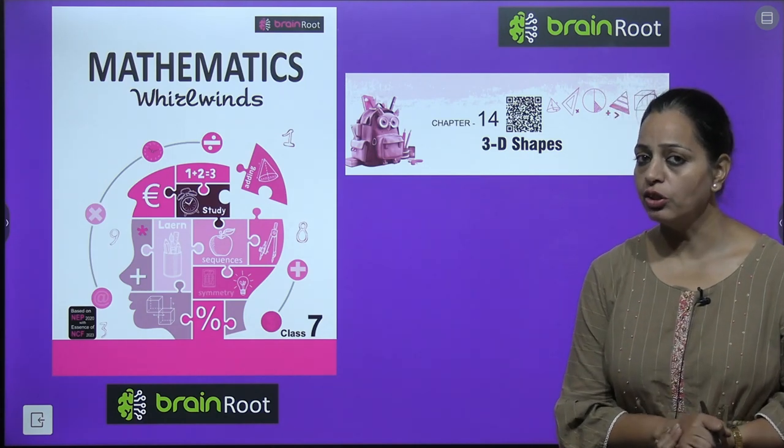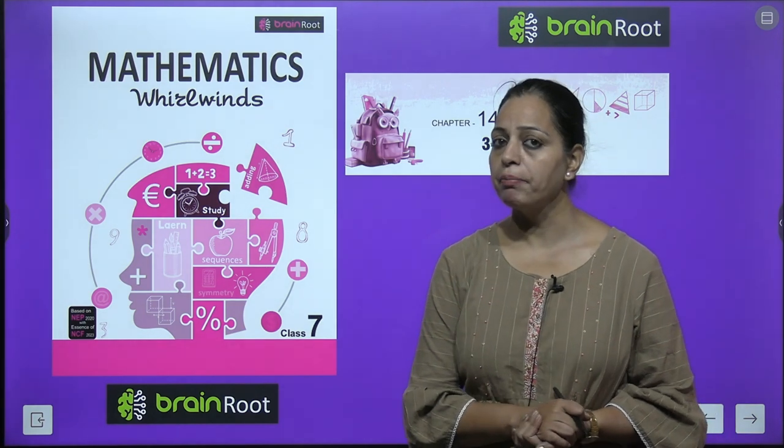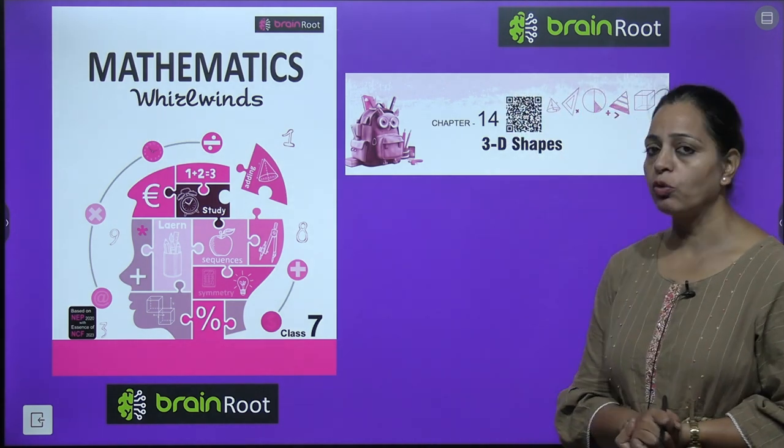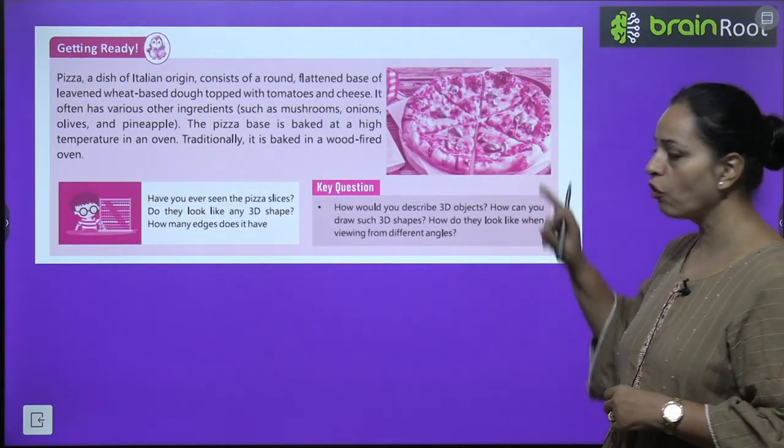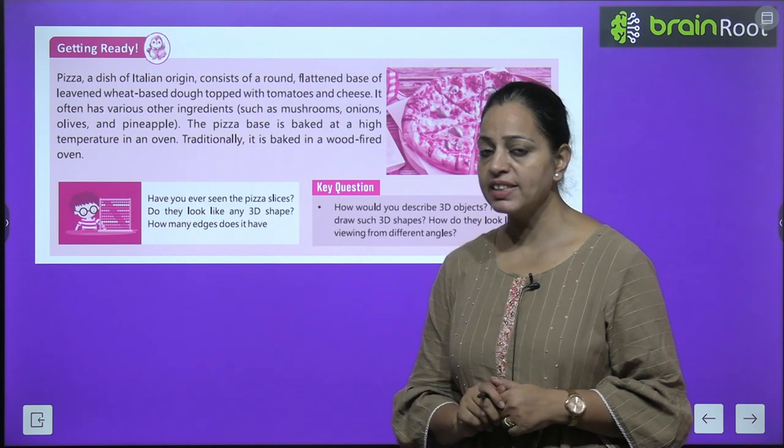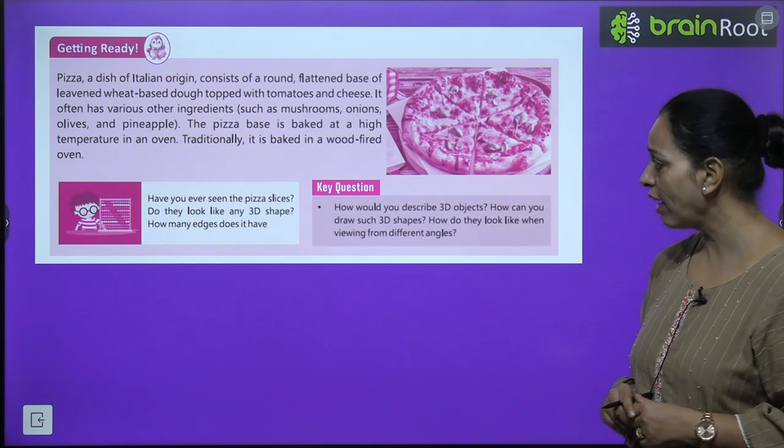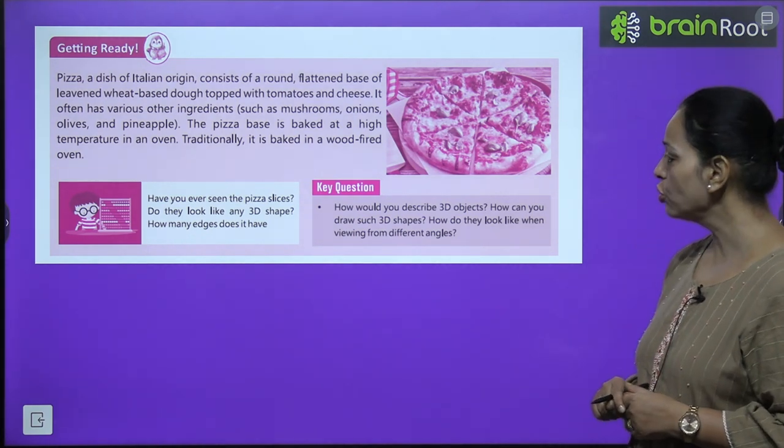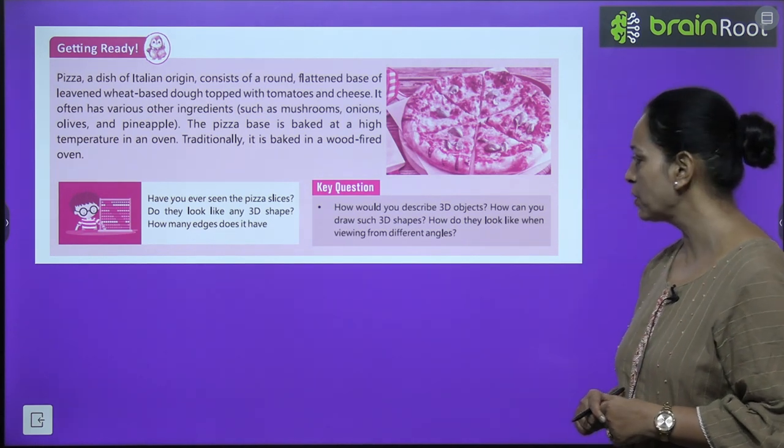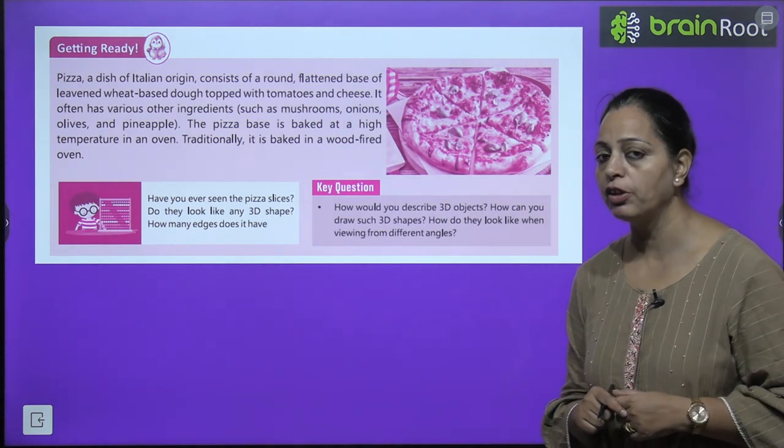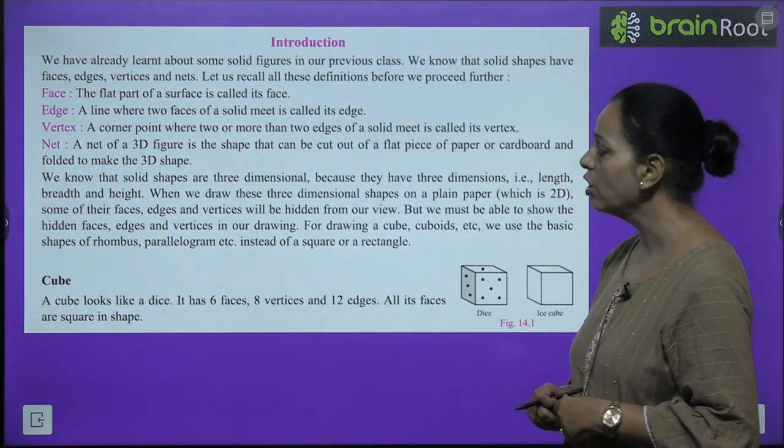Hello kids, welcome back. This is Dementor Neetu. Today we are doing Mathematics World Winds Class 7 by BrainRoot. We are doing Chapter 14: 3D Shapes. Getting ready - you can see this picture of pizza. Have you ever seen pizza slices? Do they look like any 3D shape? How many edges does it have? How would you describe 3D objects? How can you draw such 3D shapes? How do they look when viewing from different angles?